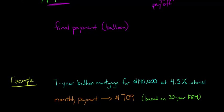When you go to calculate for a balloon mortgage, even though it's a seven-year balloon, we're going to calculate the monthly payment as if it was a 30-year fixed-rate mortgage. We're going to have a monthly payment of $709. That's as if we had a 30-year fixed-rate mortgage for $140,000 at 4.5% interest.